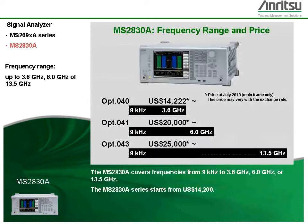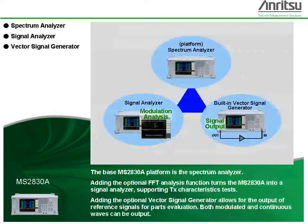The MS2830A covers frequencies from 9 kHz to 3.6 GHz, 6.0 GHz, or 13.5 GHz. The MS2830A series starts from $14,200. The base MS2830A platform is the spectrum analyzer.